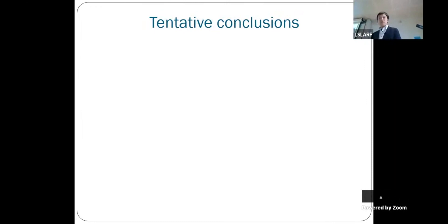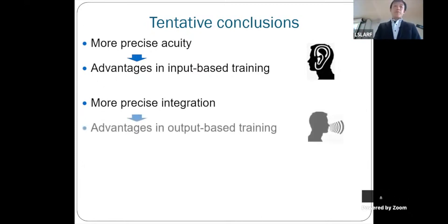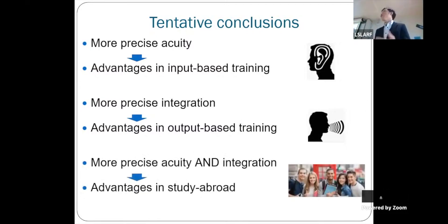I want to end this talk sharing our MA students and my team's tentative conclusion. Because now we're trying to adapt this paradigm to the classroom context. If you find your participants or students have more precise acuity, this could hint that they may excel in input-based training when they receive input training, like recast training. If you find students have more precise integration, like the drumming thing you did, this could indicate they may benefit more from output-based training. Finally, if you have both acuity and integration, it's good for you to do something beyond. That's the message.